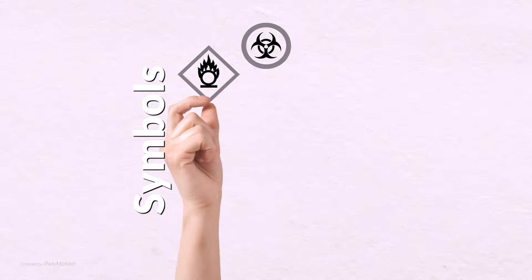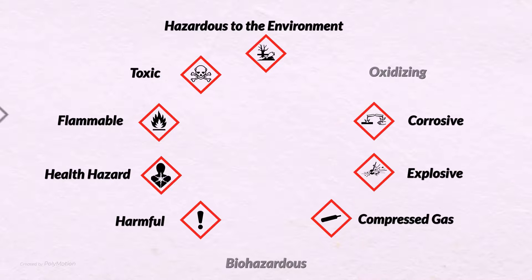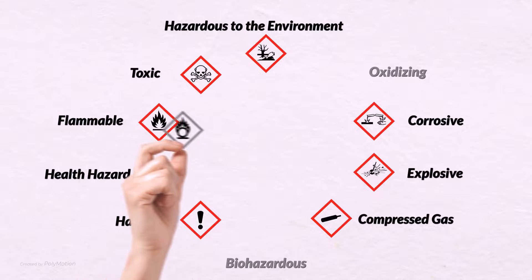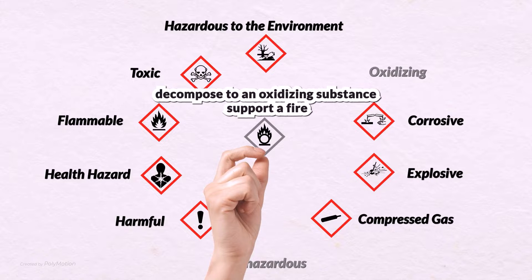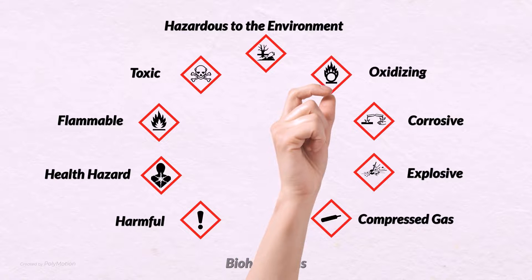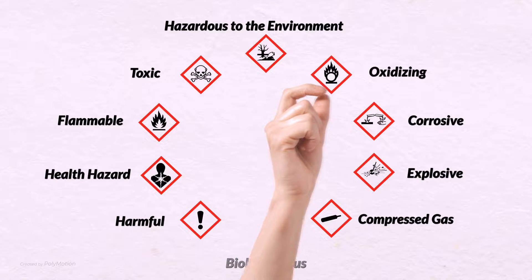The flame over circle pictogram is used to indicate oxidizing gases, liquids, and solids. They may enhance the combustion of other materials. Oxidizing.